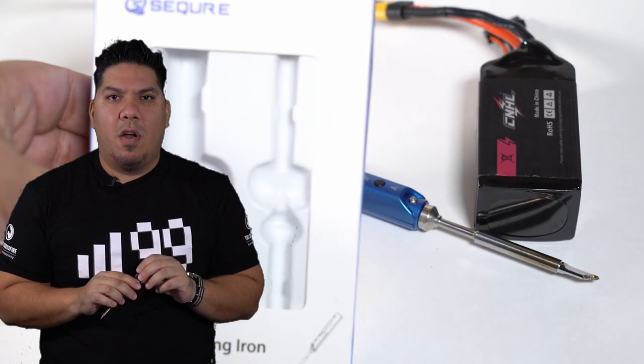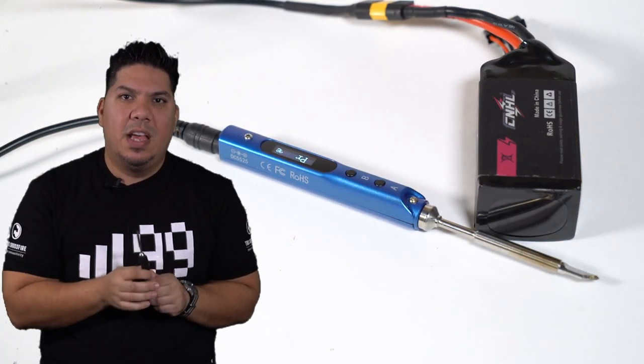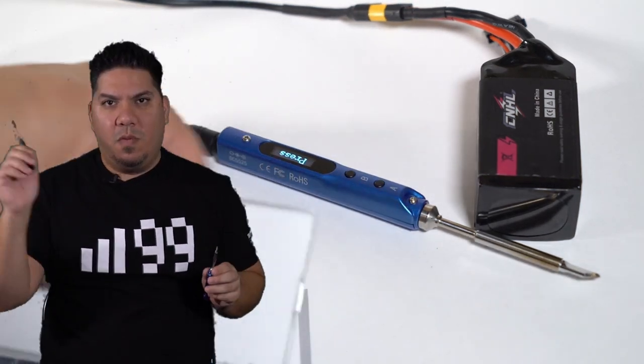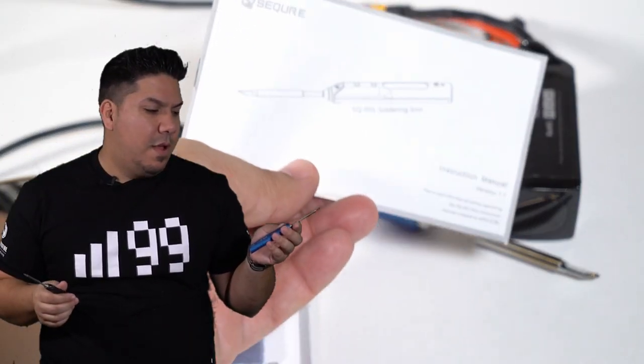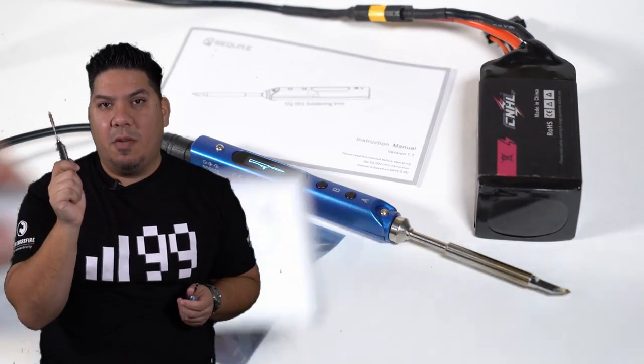...crashing, ripping a motor wire off that could have easily been fixed in about 30 seconds with one of these, and then you forget it at home. So now I will have one for the field, one for home. Outstanding. You have no idea how many times this has saved me, kept me out in the air at a race or just a fun fly. You have no idea how many times I've been able to loan this to somebody out in the field to keep them going.